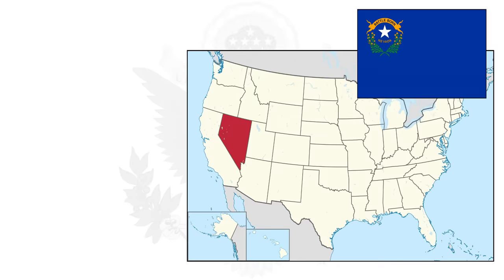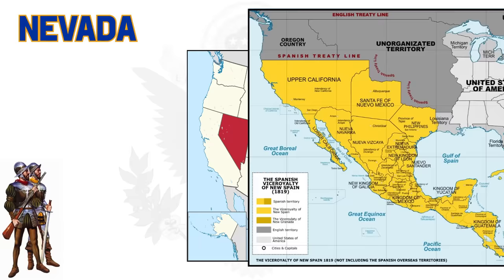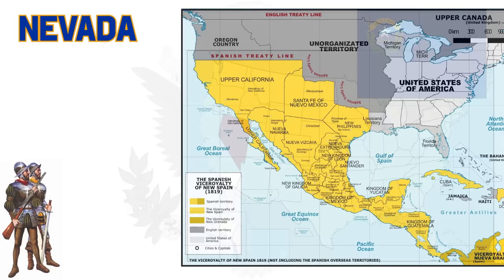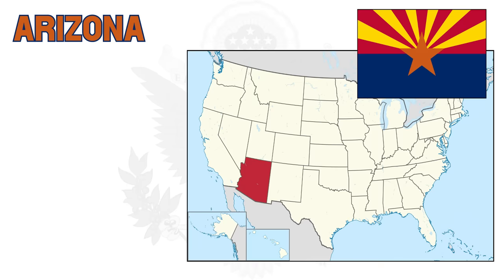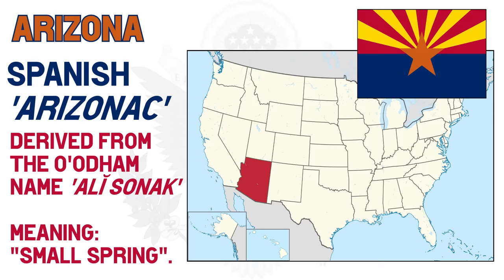Next to California is Nevada. Also having been named by the Spanish — most of the South/West states were first part of the Spanish colonial empire, then Mexico, and then finally conquered by the US — the name roughly means 'snow-covered' and comes from the local mountain range, Sierra Nevada. Then Arizona: the state's name appears to originate from an earlier Spanish name, Arizonac, which derives from the O'odham native language term Ali Sonac, meaning 'small spring.'